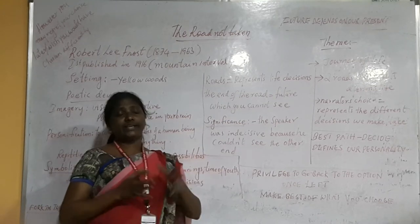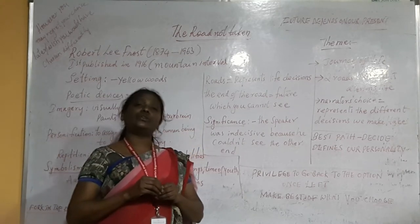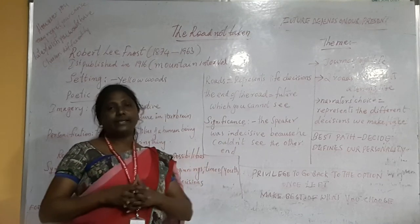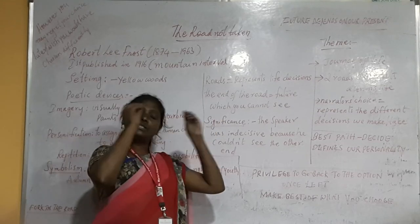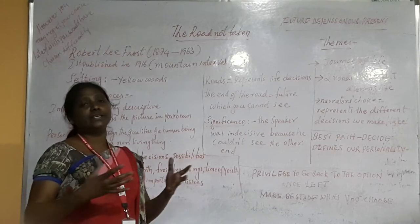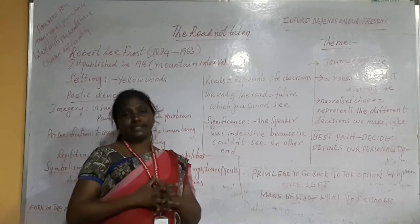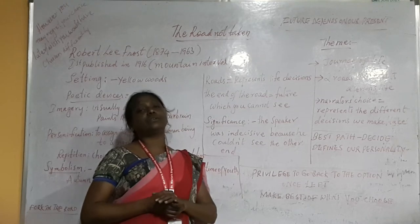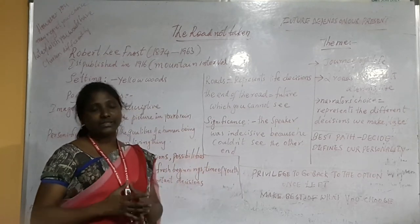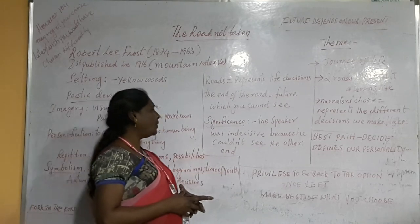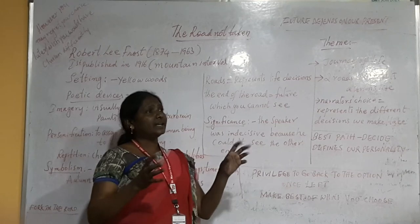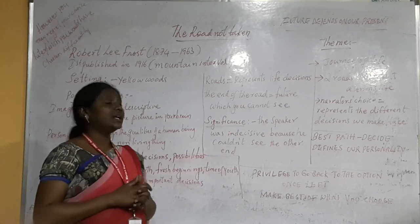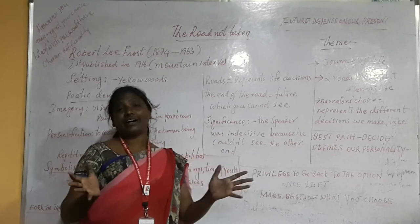The end of the road — the poet depicts the end of the road at a certain point in time. The poet couldn't see the end of the road, which symbolizes that we cannot predict the future and we cannot see what will happen when we take a certain decision. The poet is in confusion — the two roads diverged and he couldn't take a stand at that point in time.